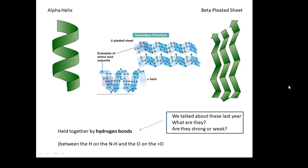You did them last year. If you can't remember, then look it up. Do a bit of revision on hydrogen bonds, and you should remember that they're not particularly strong. You've got between the hydrogen on the NHs and the oxygens on these Os with the double bond, there are hydrogen bonds holding these secondary structures together. As I said, they're not particularly strong.